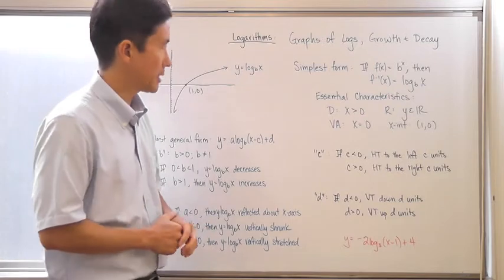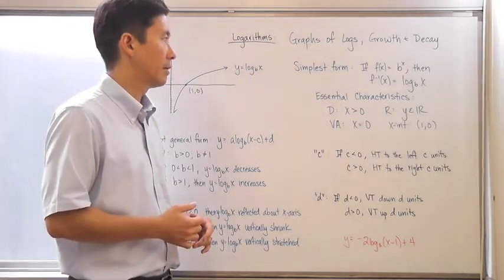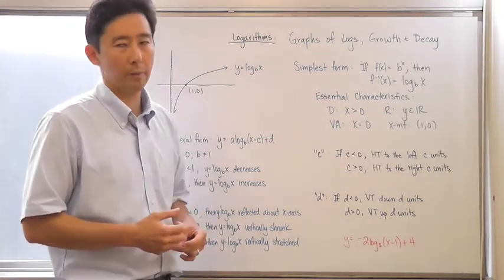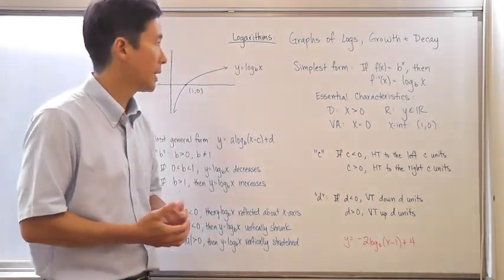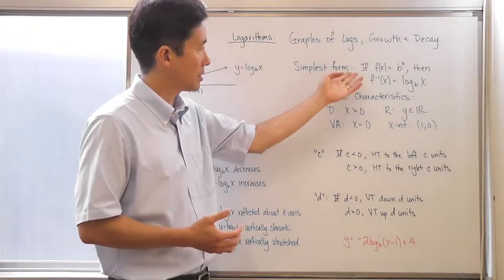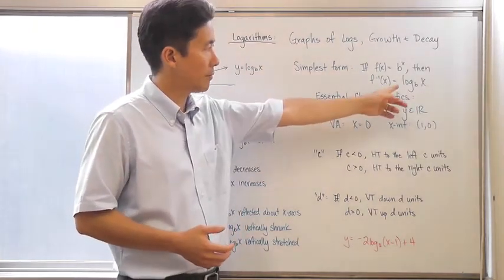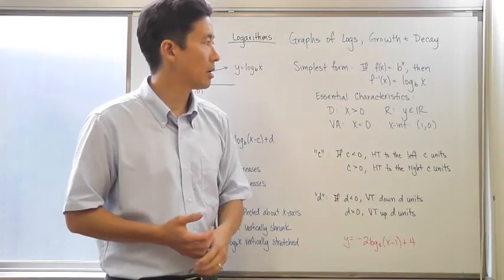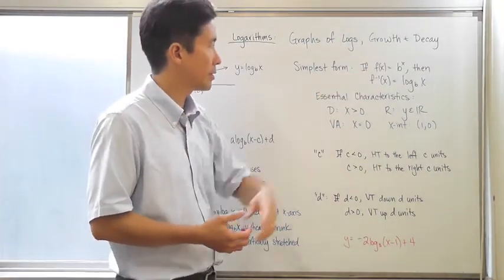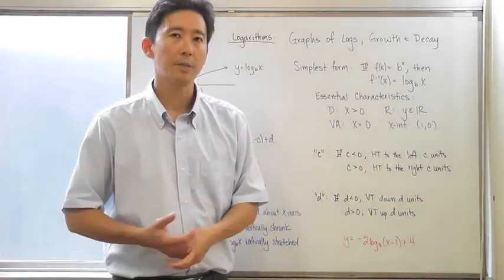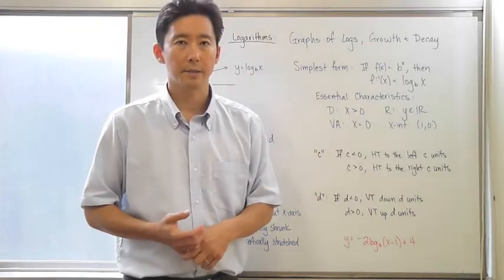Let's take a look at the simplest form of our logarithmic function. The logarithmic function is actually based upon the exponential function. In its simplest form, the logarithmic function is going to be defined as log base b of x, assuming that the original exponential function that you had was f of x is equal to b to the x.